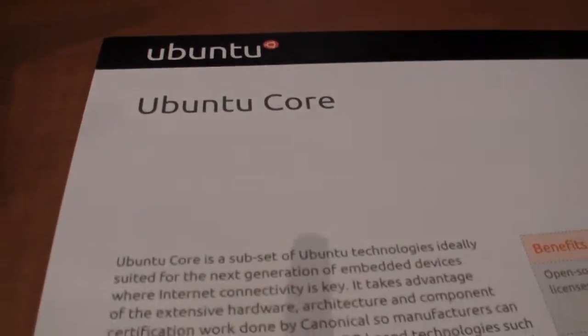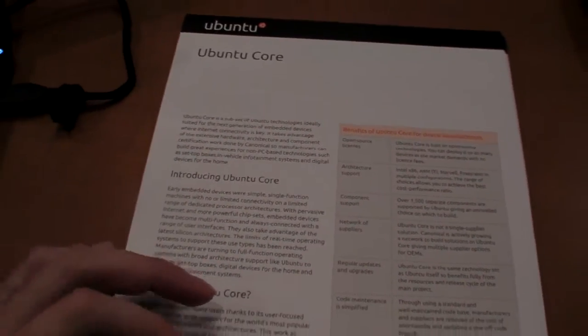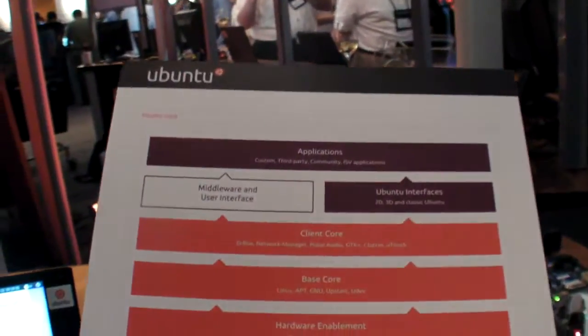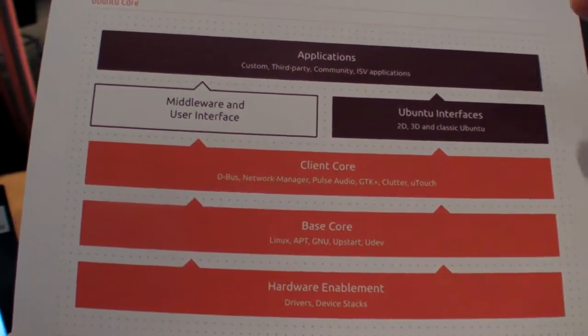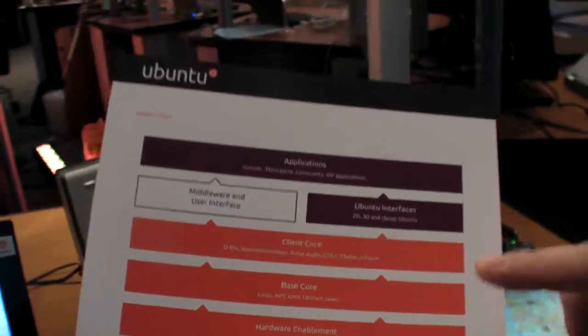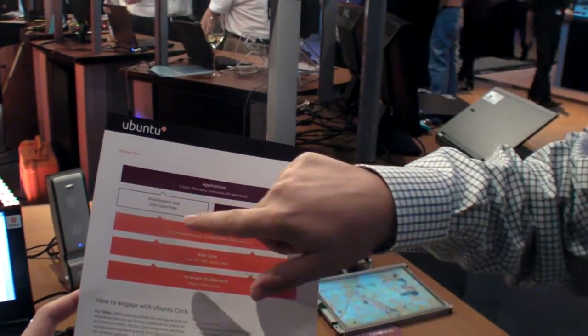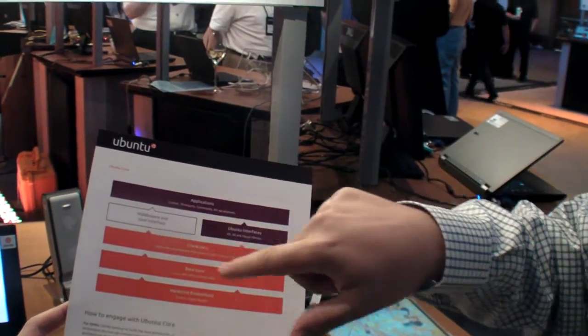Ubuntu Core is really a program — specifically a partner program — where we've signed up six partners that work within particular verticals and will be able to build a solution for you based on Ubuntu. Often those solutions will have custom interfaces, but these partners will also understand how Unity works and can build an interface based on Unity as well. This shows how Ubuntu Core works: we have the base operating system, the kernel, user space applications, and then an Ubuntu Core partner might help you build a custom middleware user interface.